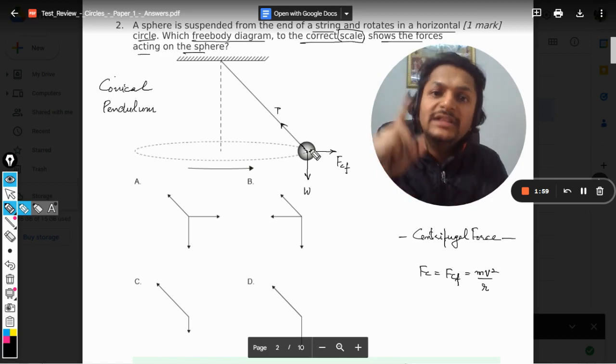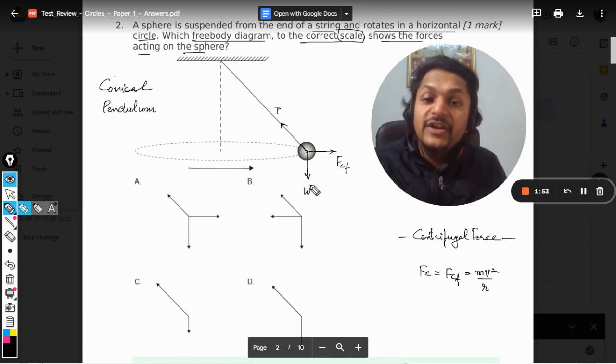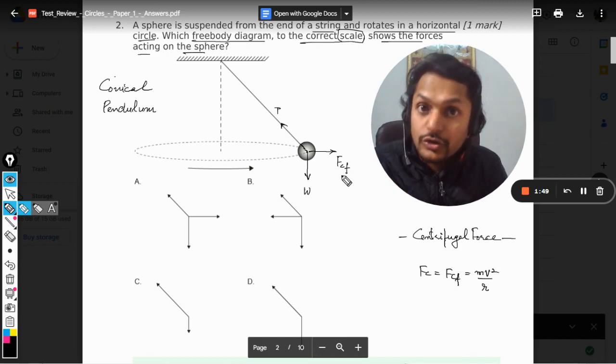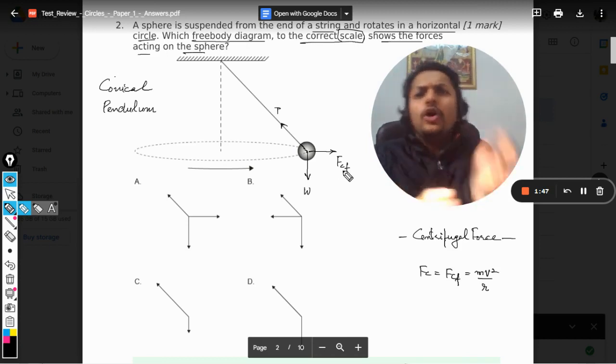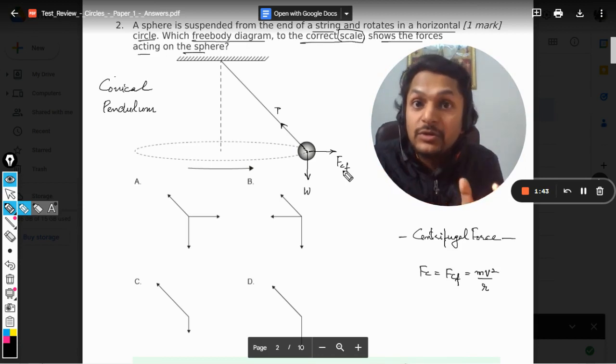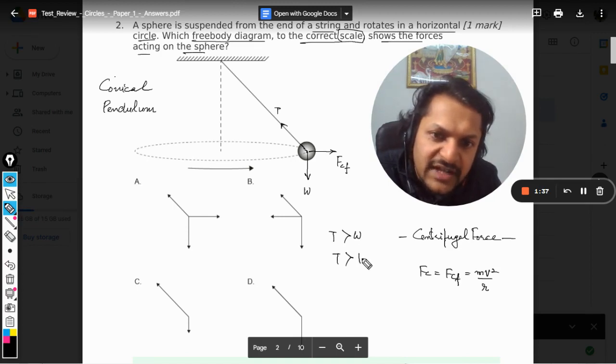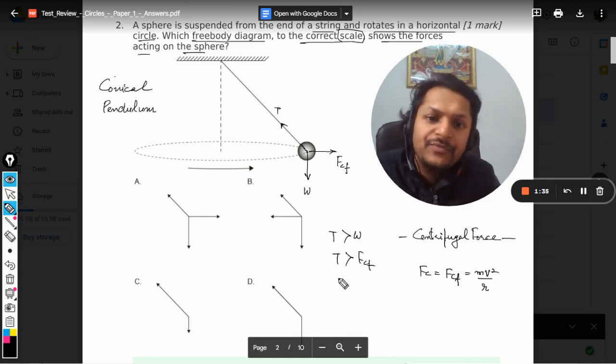There will be a resultant here that will be equal to the tension T. Only then equilibrium can be created, and it only means that this T will be more than weight. And it will definitely be more than the centrifugal force also - you call it centrifugal or centripetal, now it's the same thing because we are considering only magnitude. So I can say that tension T is greater than weight, and tension T will definitely be greater than centrifugal, and hence tension T is definitely greater than centripetal because centrifugal and centripetal are same in magnitude.